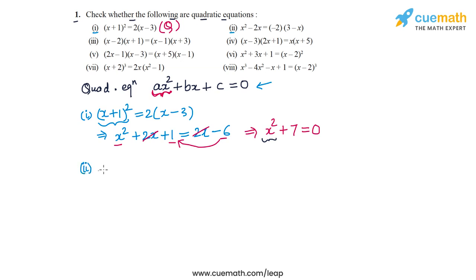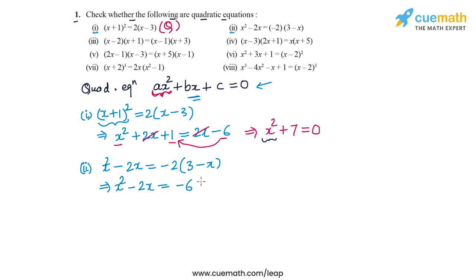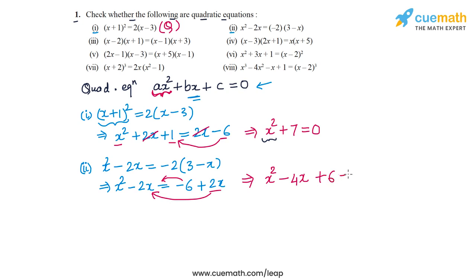In Part 2 the equation is x² − 2x = −2(3 − x). We expand the right side to get −6 + 2x. Bringing all terms to the left hand side: the 2x becomes −2x, so we have x² − 2x − 2x, which is −4x, and the −6 becomes +6 on the left side.